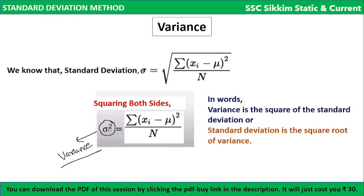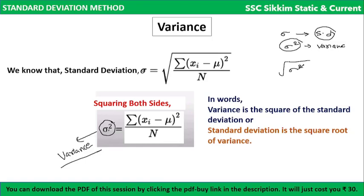The only difference between variance and standard deviation is the square root. Variance is the square of the standard deviation. We can convert between them: variance = sigma², and standard deviation = square root of variance.